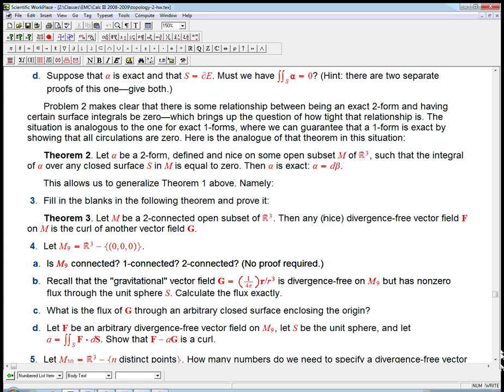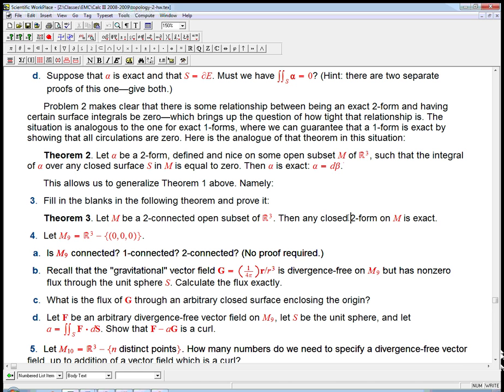So now we can just change this. Let M be a two connected open subset, then any closed two form on M is exact. Very, very tight. And the two and the two, it's crucial that those match. And the analogous statement for conservative is that if you're on a one connected space, simply connected, then any closed one form is exact. You just change the twos to ones and it's exactly the same. And the three, this really, we'll discover later, that this has nothing to do with whether you're in R3 or R2 or R17. It's really about if you're on a two connected space, then any closed two form is exact. We won't prove that in massive generality, but it's true in massive generality.